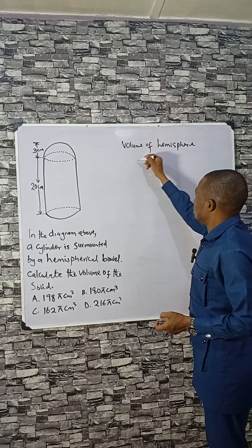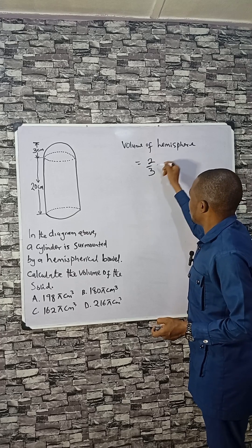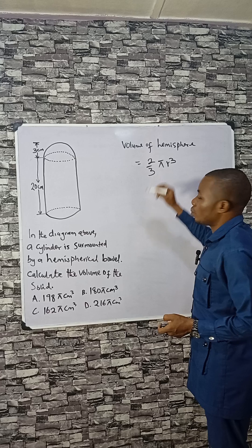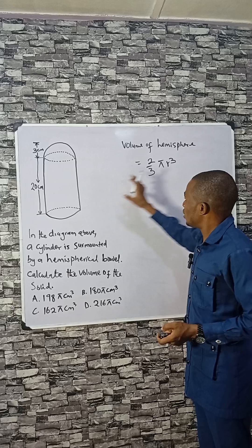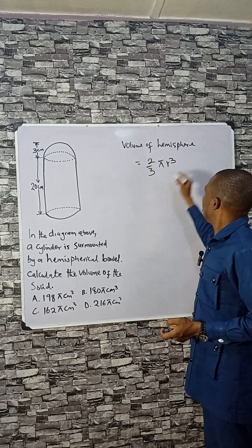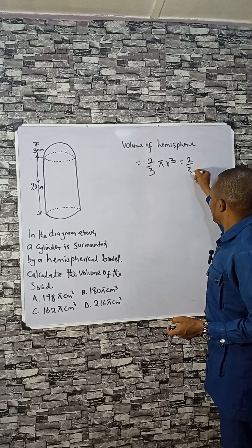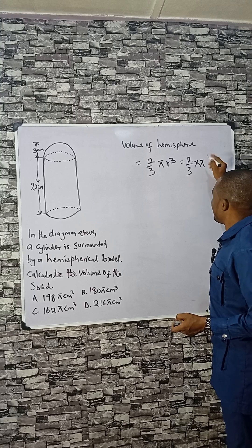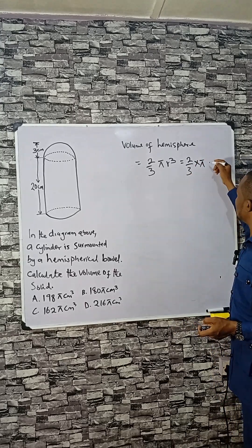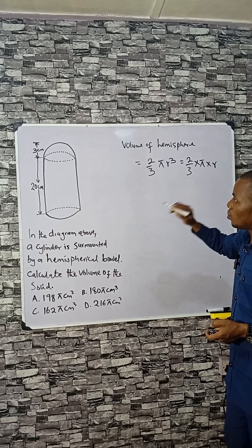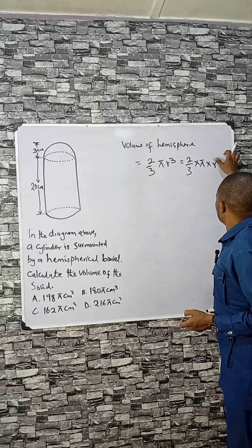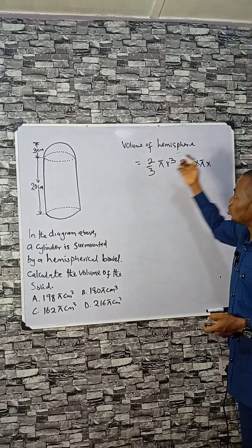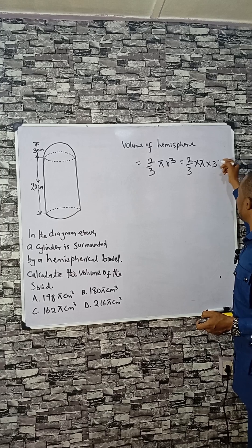The volume of a hemisphere is given by 2 over 3 pi r cubed. That of the complete sphere is 4 over 3 pi r cubed, and dividing by 2 gives you the hemisphere formula. Since the answer is expressed in terms of pi, we leave pi to stand. The height of the hemisphere is also the radius, so we replace h with r, which is 3. So we have 3 cubed, that is 3 times 3 times 3.